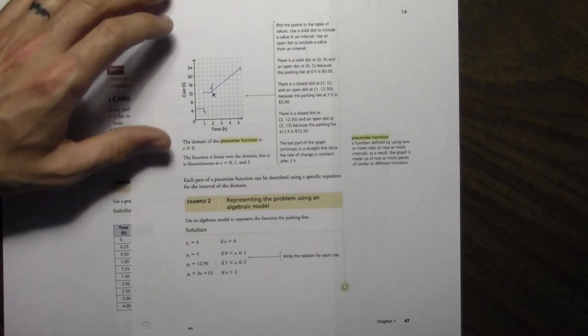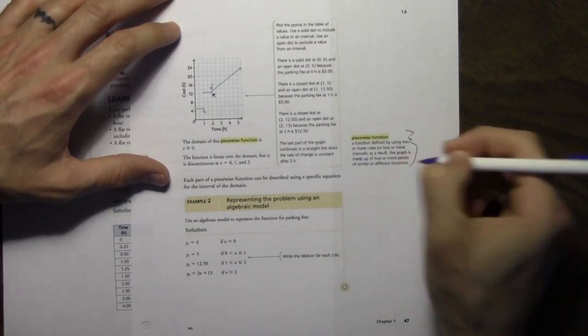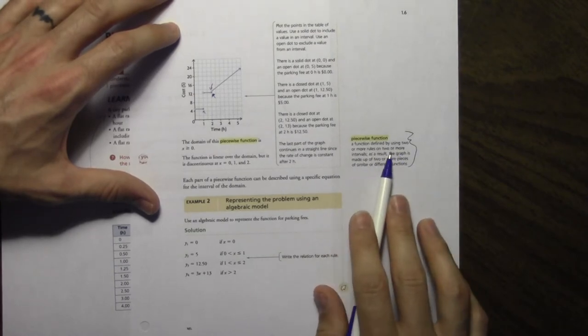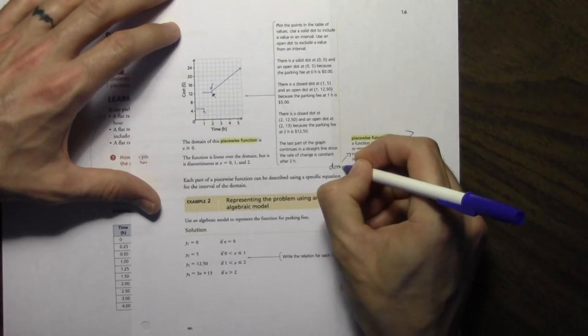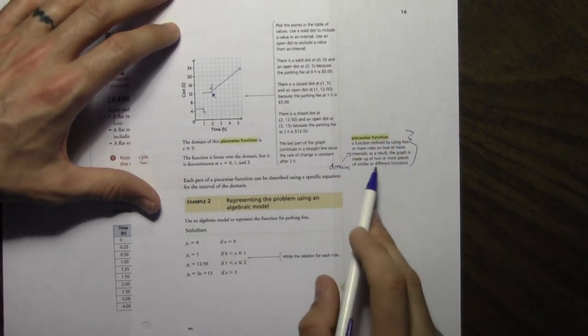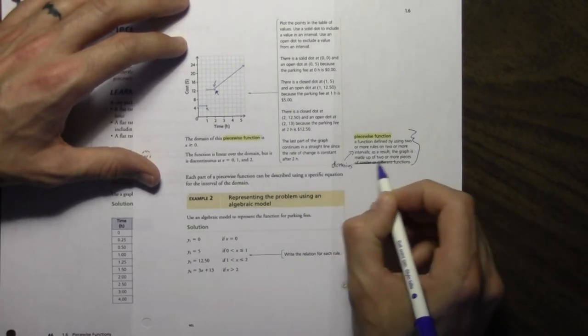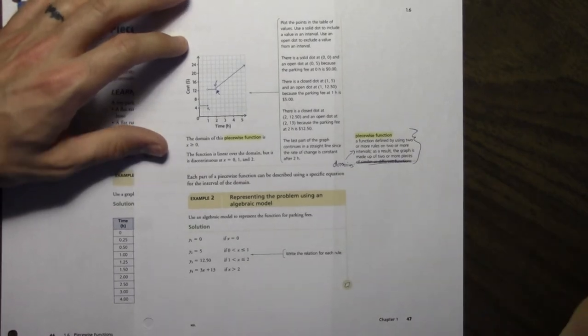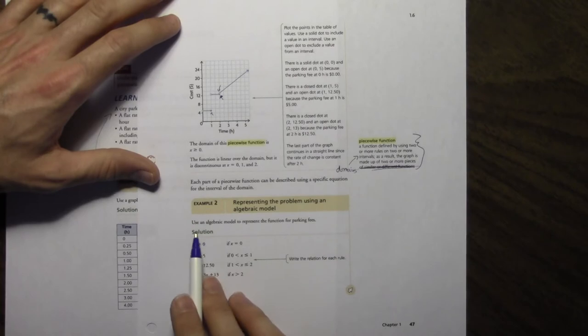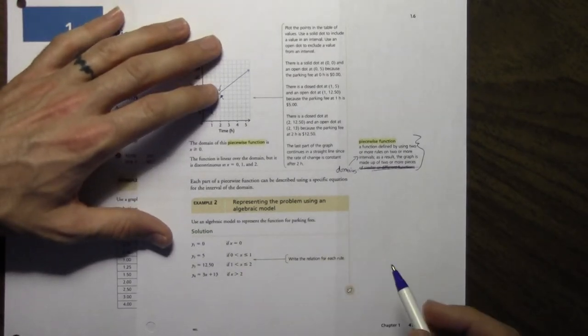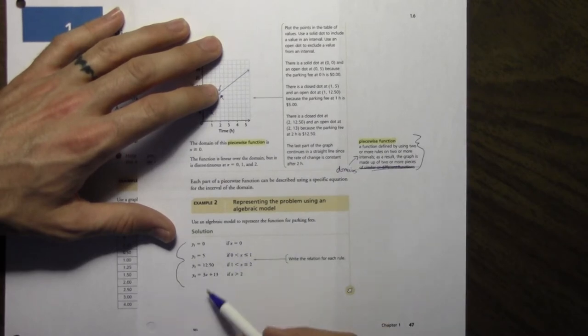For each part of the piecewise function is going to be described using a specific equation for the interval of the domain. Here's our definition: Piecewise function. A function defined by using two or more rules on two or more intervals. I would kind of even describe this as two or more domains. You want to think of it as the X value. As a result, the graph is made up of two or more pieces of similar or different functions. Similar or different, that really don't need any of this, right? The graph is made up of two or more pieces. To say it's similar or different is really saying nothing. Example two: Represent the problem using algebraic model. Use an algebraic model to represent the function for parking fees. So you're expected to know how to do this from common sense. There's not really much I can teach you to get here other than just looking at this example and seeing how they did it.